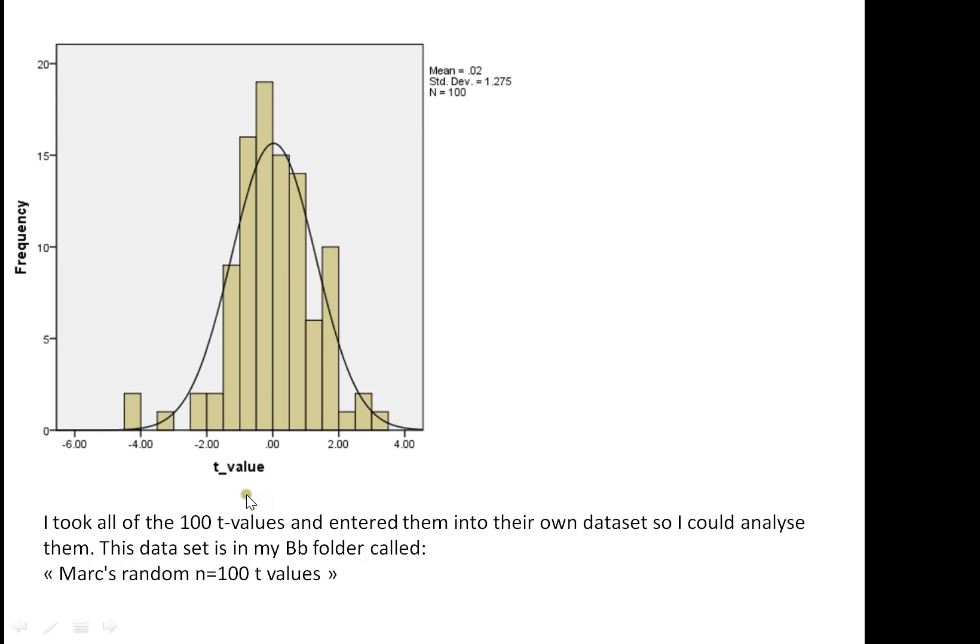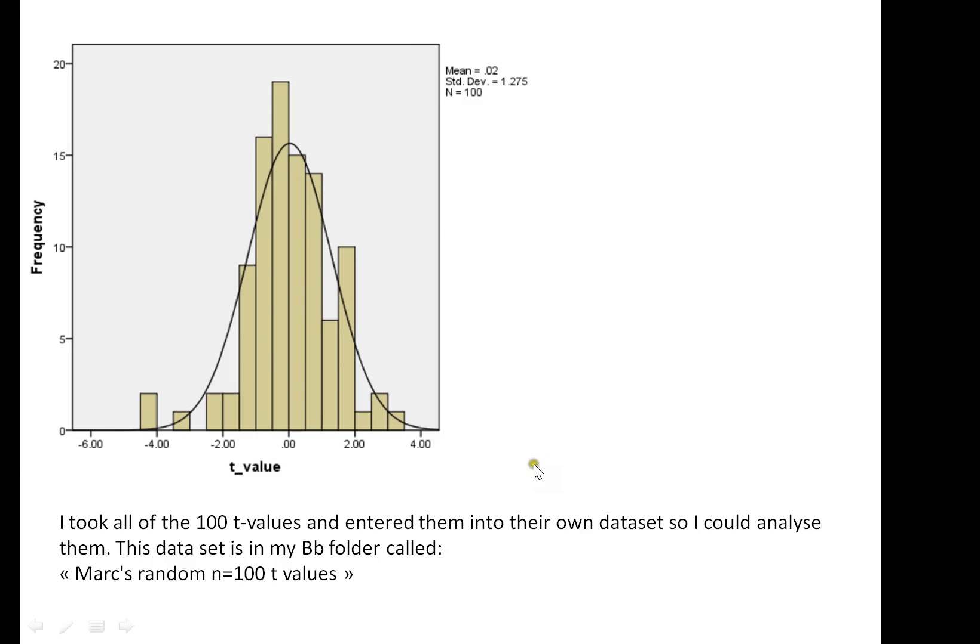If we plot the frequency distribution of those t-values, and I've asked SPSS to overlay a normal distribution, we can see that it looks roughly normal. It's not perfectly normal. We've got a couple of extreme negatives, where we don't have quite as extreme positives, but if I was to generate 2,000 random numbers, do exactly the same thing, or 4,000 or 8,000, this will get increasingly normal.